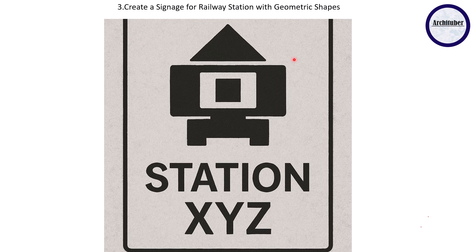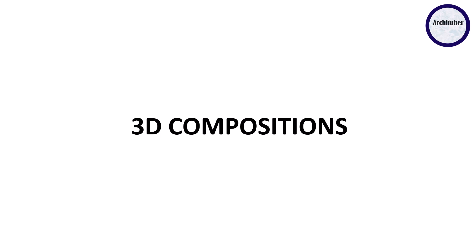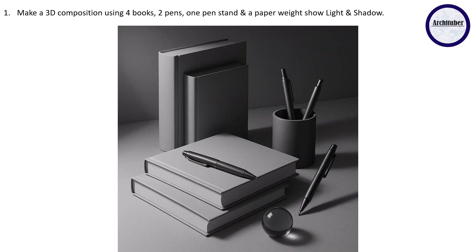The first question is make a 3D composition using four books, two pens, one pen stand, and a paper which shows light and shadow. Now see how they have composed the books first. Four books - they've stacked two books on one another and then you have these two books standing. Then there's one pen stand which has pens.